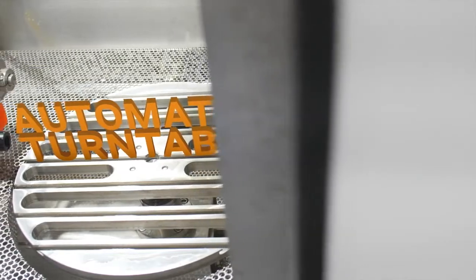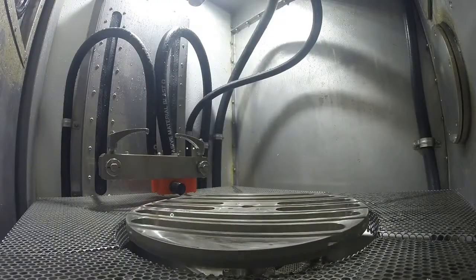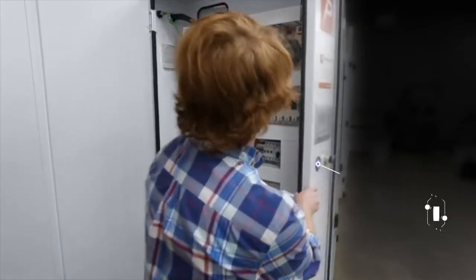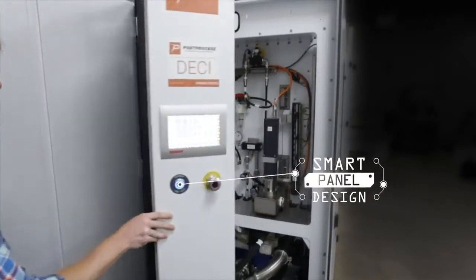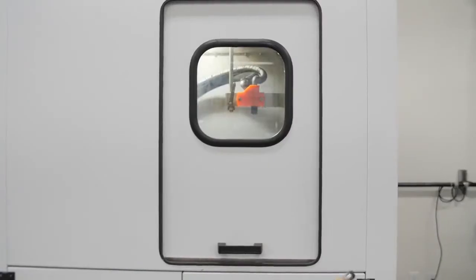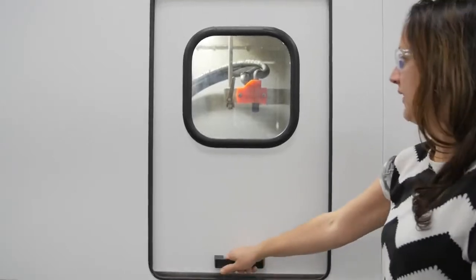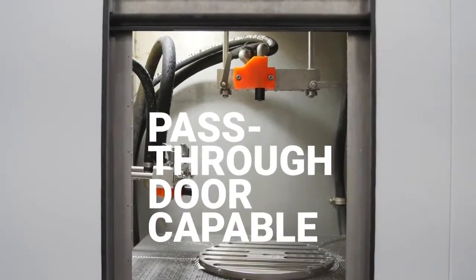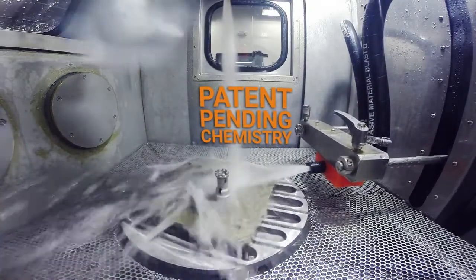Our automated turntable reduces manual touch, ensuring consistency of your end part. A smart electrical panel design, hinged for easy access for maintaining controls and motors. Achieve even greater throughput with the system's pass-through door capability, helping streamline your entire additive manufacturing operation.